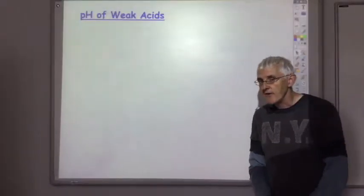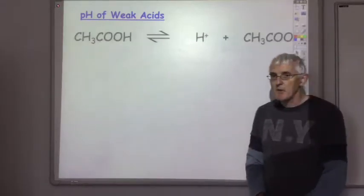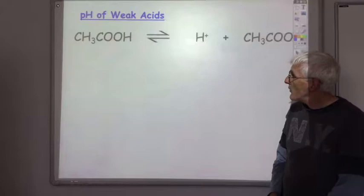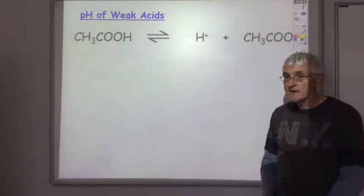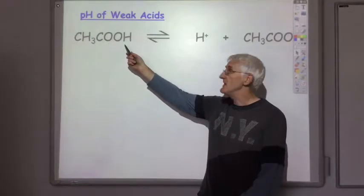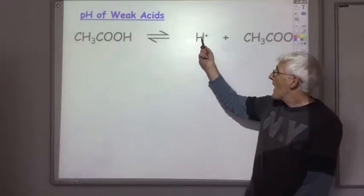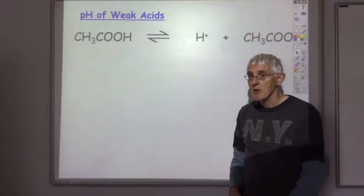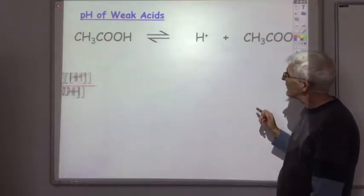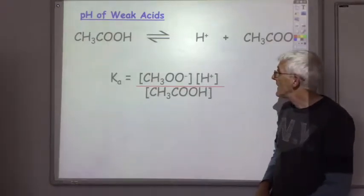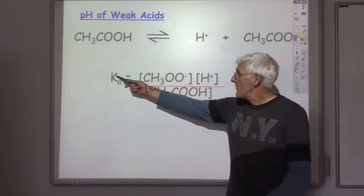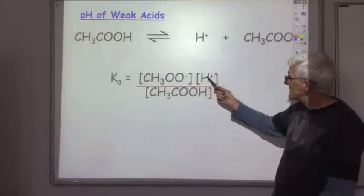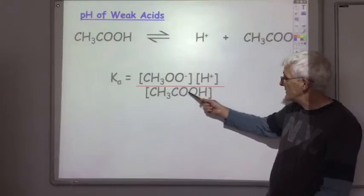Let's look at how we work out the pH of a weak acid. Here's our typical weak acid, ethenoic acid. If we know we've got one mole per litre of ethenoic acid, we cannot assume we'll have one mole per litre of hydrogen ions, because being a weak acid it does not completely dissociate. The concentration of H+ ions produced will depend on how many of the ethenoic acid molecules dissociate, which can be worked out from the equilibrium constant Ka — the concentration of the products divided by the concentration of the reactants.